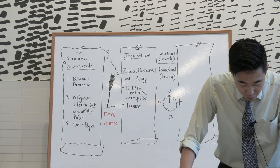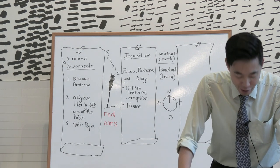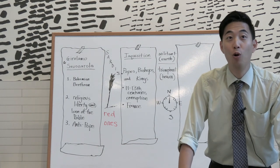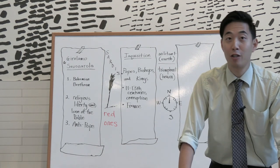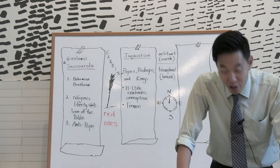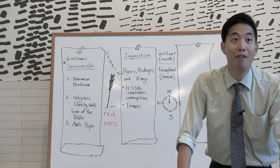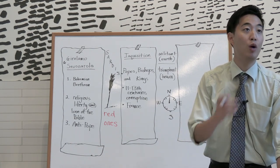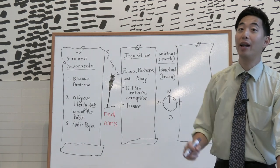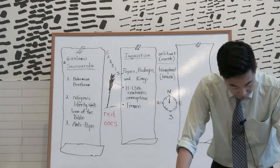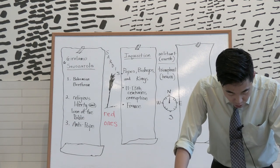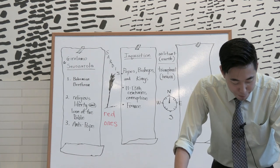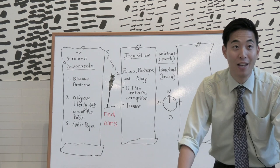When Clement V moved the papacy to Avignon, you notice that these Catholic Popes just did whatever they wanted to do. It's power, not going by what is spiritual and what is right. Durant tells us there began the 68 years of Babylonian captivity of the Popes once the papacy was moved to Avignon.